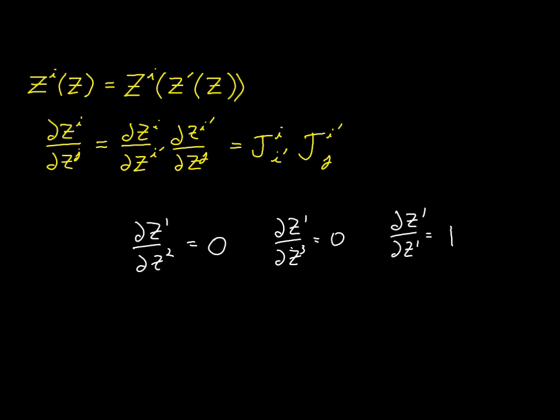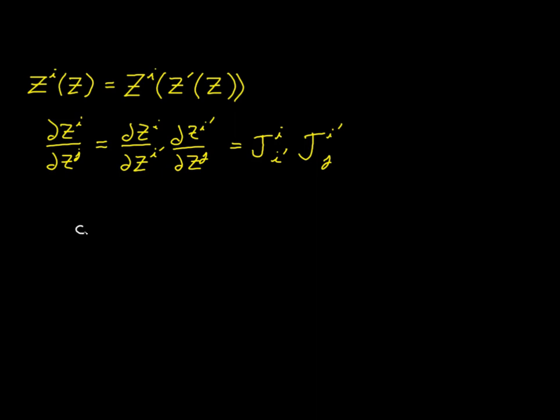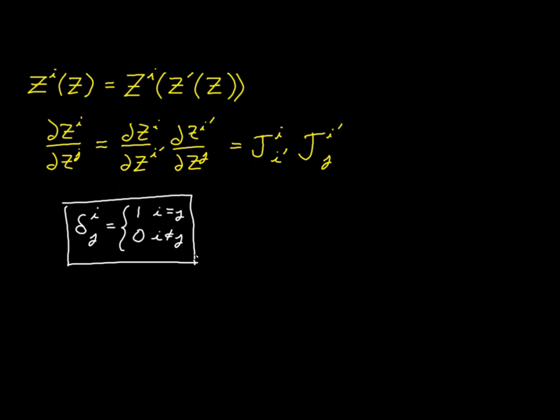So that leads us to the definition of a new function. We're going to say that delta with indexes i and j is going to be equal to one where i is equal to j, and it's going to be zero if i is not equal to j. So it has only two possible values — one if the indexes are the same, zero if they're different — and we're going to call this the Kronecker delta function.